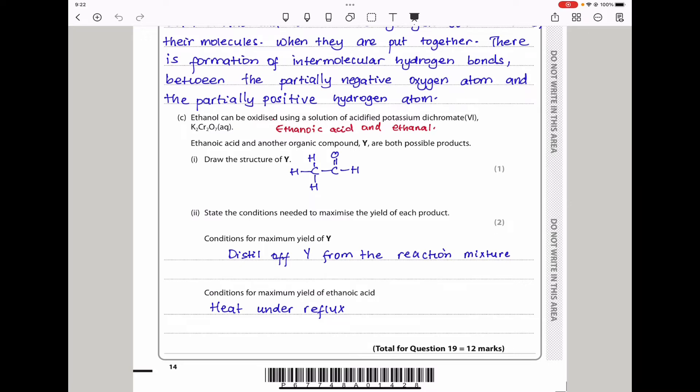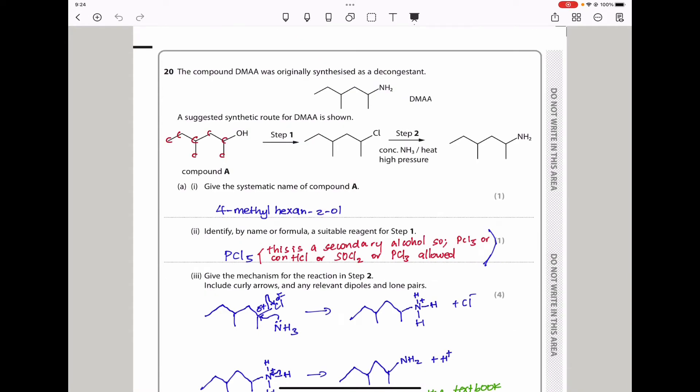Question 20. A compound DMAA was originally synthesized as a decongestant. This is the structure of DMAA. A suggested synthetic route for DMAA is shown. We begin with an alcohol, go through a haloalkane, and finally into an amine. They ask, give the systematic name of compound A. I need to position the carbons here so that we can see which one is the longest chain. This one here is going to be the longest chain because the functional group is attached directly to the carbons within that chain. This is going to be carbon 1, carbon 2, carbon 3, carbon 4, 5, and 6.